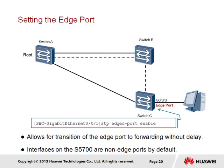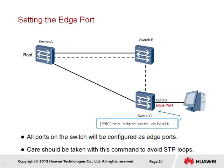By applying the edge-port enable command, the port will immediately transition to a forwarding state since port status negotiation is not required. This command applies to a single port interface and is configured under the port interface view. Where multiple ports need to be configured as edge ports on a single switch, the stp edged-port default command may be used. Unlike the edge-port enable command, this command is configured under the system view and will apply to all port interfaces on the switch. However, since not every switch interface will operate as an edge port, the edge-port disable command should be used on a per-interface basis to allow RSTP to operate on those select port interfaces.